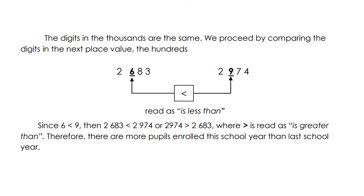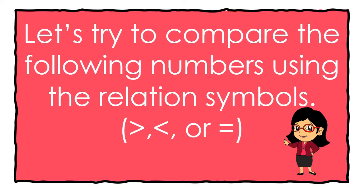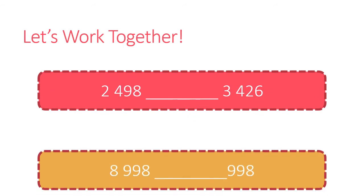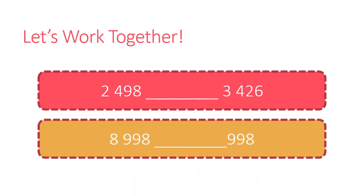Therefore, there are more pupils enrolled this school year than last school year. Now let's try to compare the following numbers using the relation symbols. What symbol will we use? If we have 2,498 compared to 3,426, what would be our relation symbol?